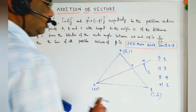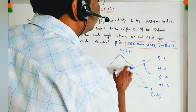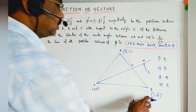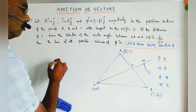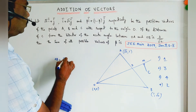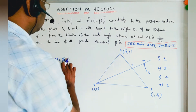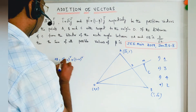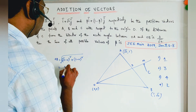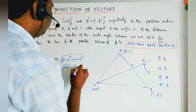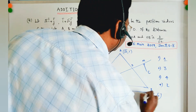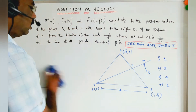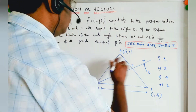Now we find the distances. |OB| = √((√3−0)² + (1−0)²) = √(3+1) = √4 = 2. Similarly, |OA| = 2. So both |OA| and |OB| equal 2.